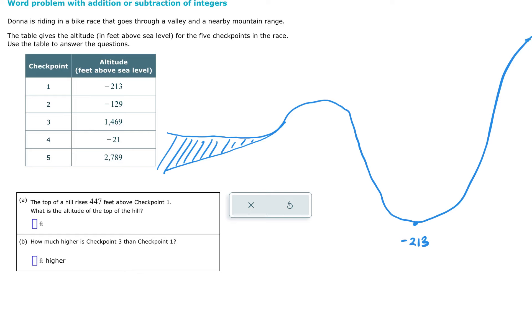The top of the hill way up here somewhere is 447 feet above checkpoint one. The question is, what is the elevation of the top of the hill? So we're going to have to add 447 feet to checkpoint one to find the elevation of the hill. In this case, we have a negative and a positive, so we're going to have some canceling out. We have bigger, more positives. 447 is more than 213, so we're going to cancel out all of those 213 and we're left with 234 positives.